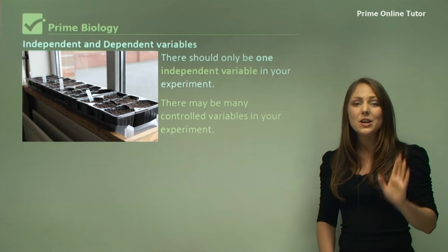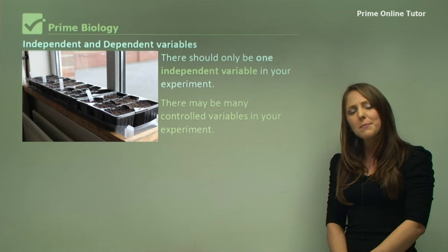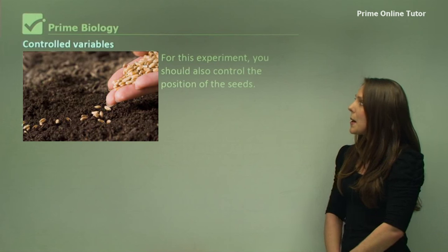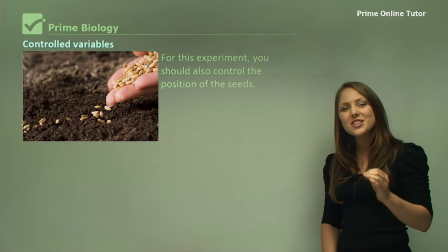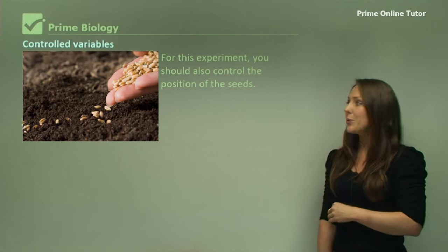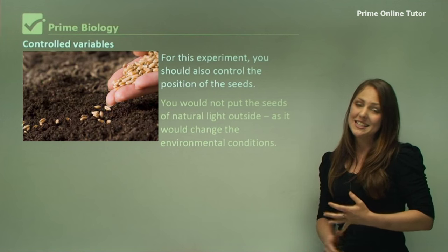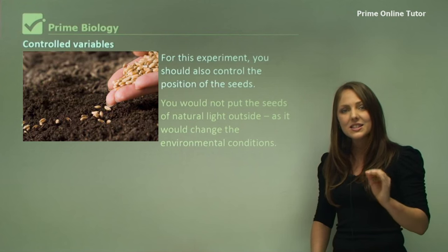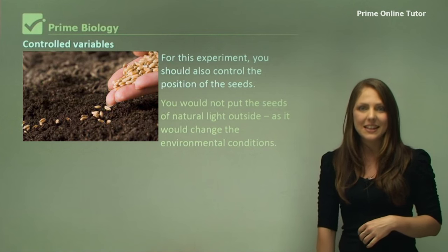There may however be many controlled variables and sometimes many dependent variables. A controlled variable here might be where you position the seeds in the actual soil. It can also be you would not put the seeds outside in the natural light. You must keep the seeds inside in the same room where the dark seeds are kept.